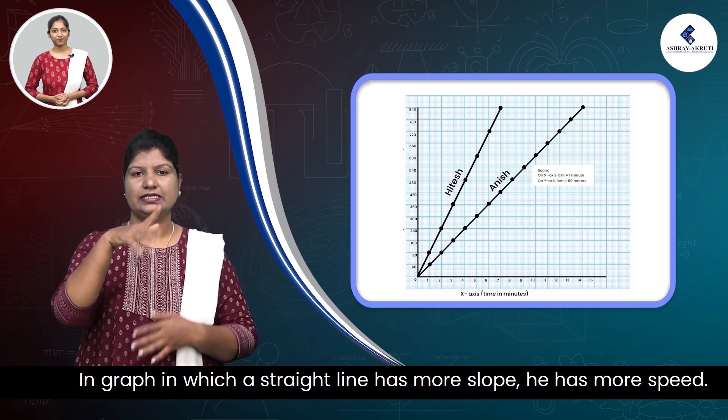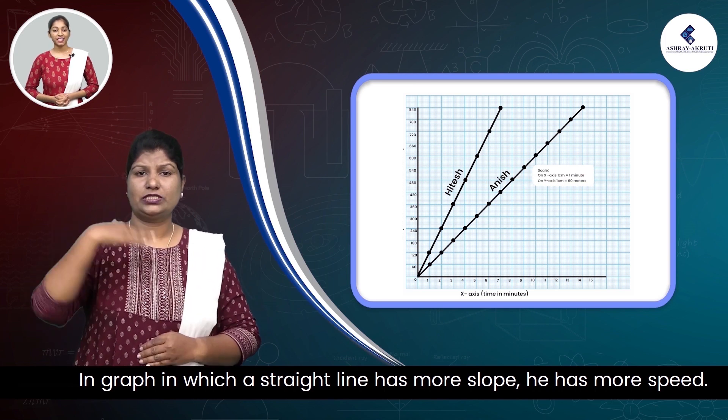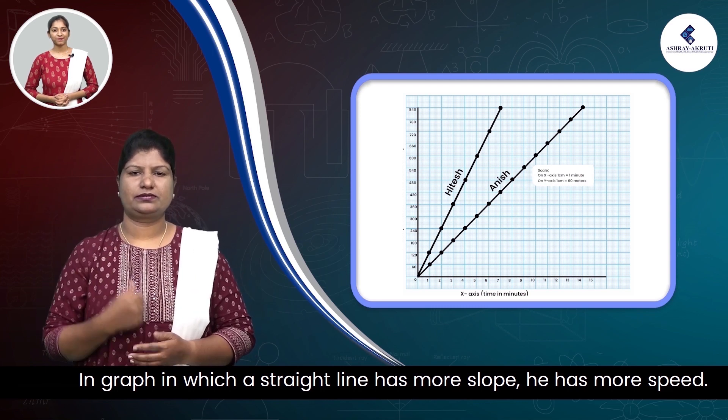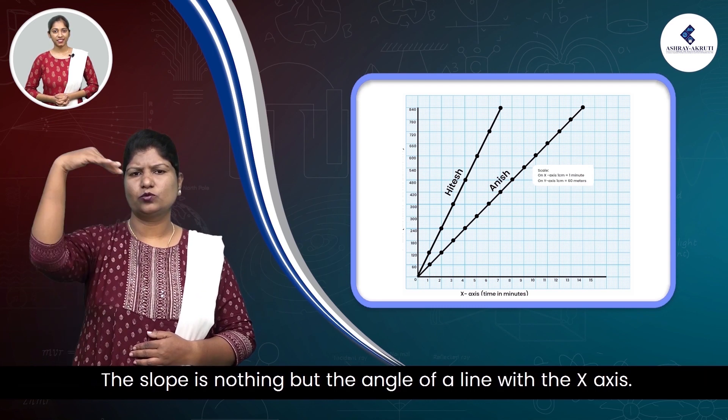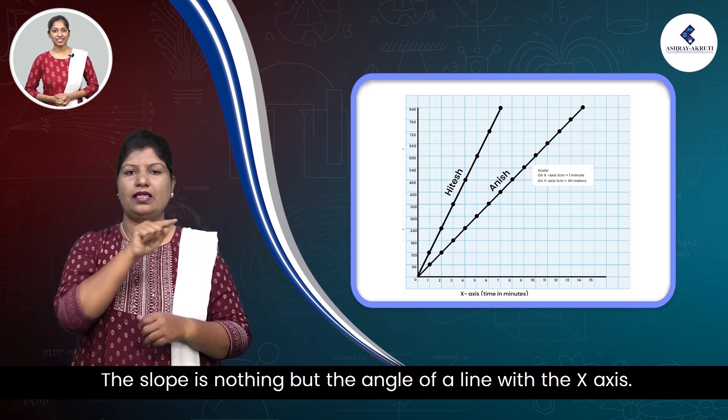In a graph, the straight line which has more slope has more speed. The slope is nothing but the angle of a line with the x-axis.